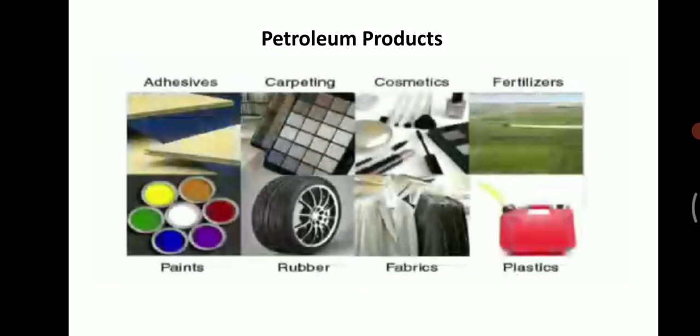Now, what are the petroleum products? Adhesives — sticking things like Fevicol — are adhesives. Carpeting — you have seen carpets. Cosmetics include lipstick, eyeliner, and different beauty products. Fertilizers are sprayed in fields and farms. Paints. Rubber is used for making tires. Fabrics are used for making clothes. And plastic. These are all petroleum products.